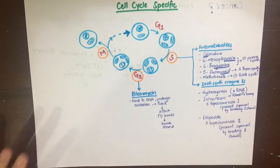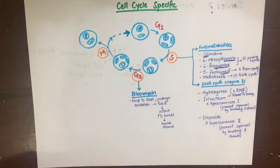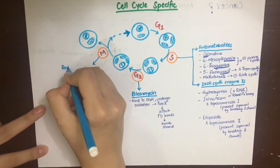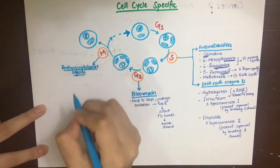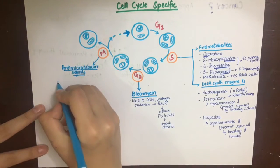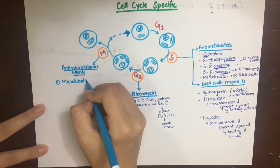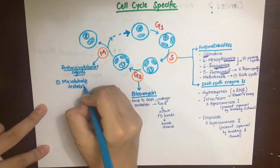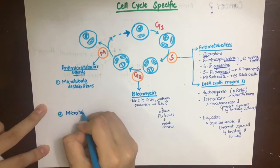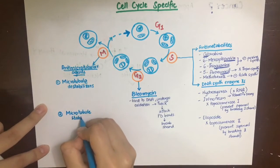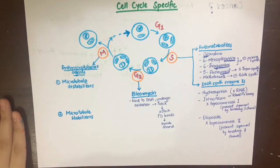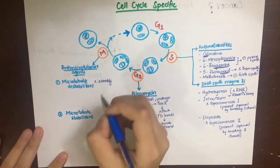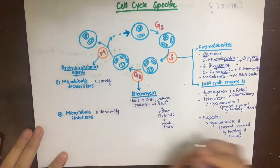Drugs that act on the M phase are called anti-microtubular agents. During early mitosis, microtubules form and extend from the centrioles to the centromeres of chromosomes, then the separated DNA moves to either side of the cell before microtubules break down again. Anti-microtubular agents either stabilize microtubules when the cell needs to destabilize them, or destabilize them when the cell needs them for division.